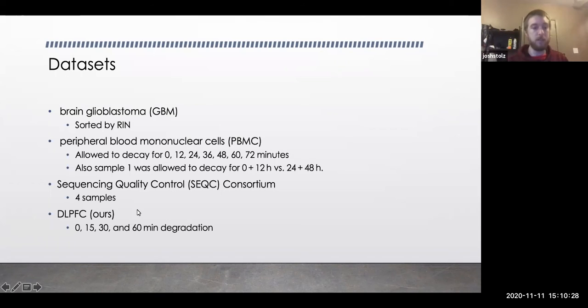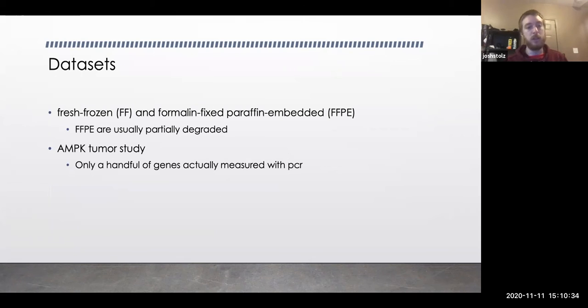But then they also use our data set, our DLPFC, at 0, 15, 30, and 60 minutes. And the last two, so they had a fresh frozen data set and a formalin-fixed paraffin embedded. And I guess their understanding is the FFPE are usually more degraded. So they're using the method as a degradation marker here. And lastly, there's an AMP case tumor study where only like one or two or I guess probably like a handful of genes were actually measured. And so you don't have the full data set or the full matrix. And they're trying to use this as a metric for imputing since there's only a handful of genes to impute.